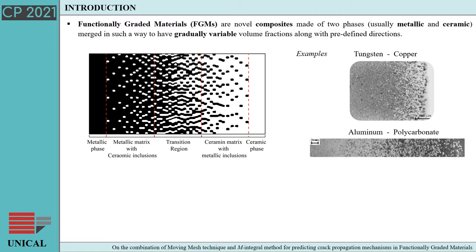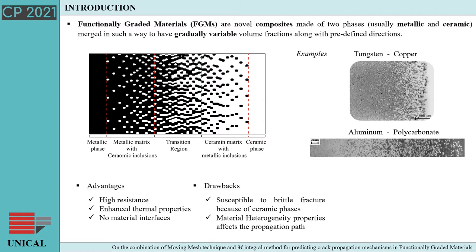Functionally graded materials are multiphase materials which involve two phases, usually one metallic and one ceramic, joined in such a way to produce smooth variable volume fractions along specific design directions. This manufacturing process leads to improved materials with enhanced thermal properties owing to the ceramic component and higher resistance provided by the metallic part. In addition, the graded macro properties avoid material interfaces, thus reducing local stress concentrations.